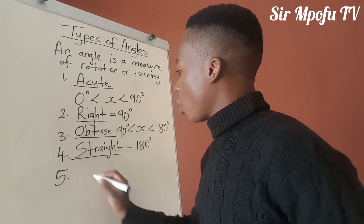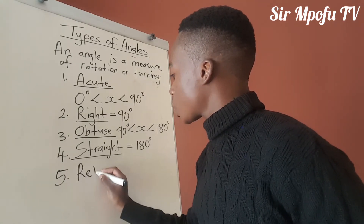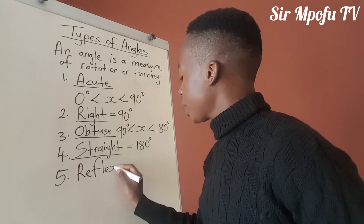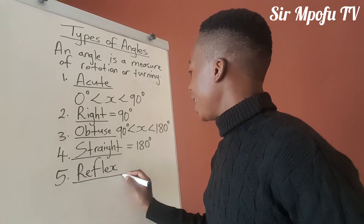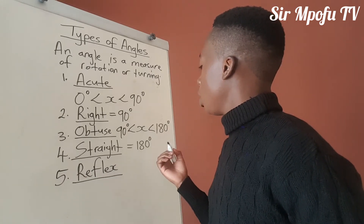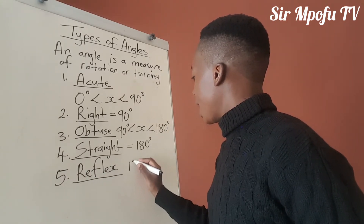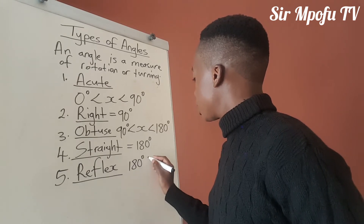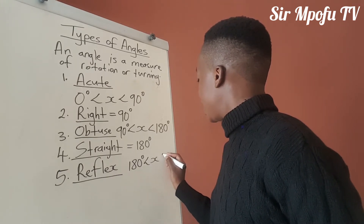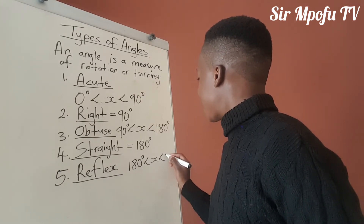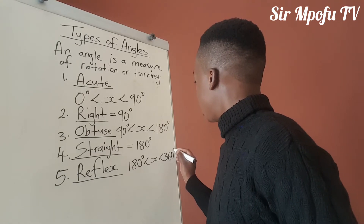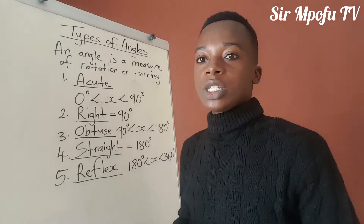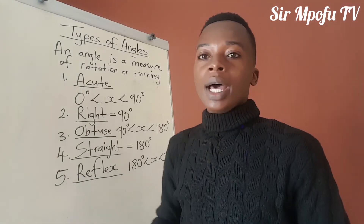Number five, we have got what is called a reflex angle. A reflex angle will be more than 180 degrees but less than 360 degrees. That is what you call a reflex angle.